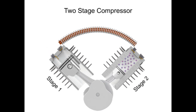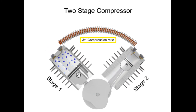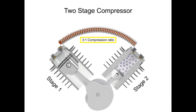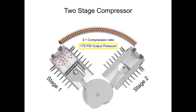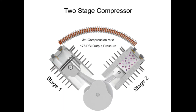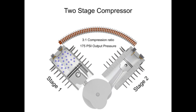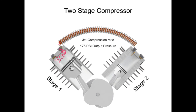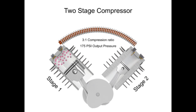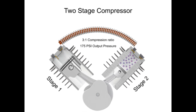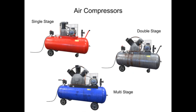Two-stage compressors have a compression range of 3 to 1 or even less per stage, but can operate up to 175 PSI. They can also deliver more air at a higher pressure than single-stage compressors of the same horsepower. If pressures of more than about 175 PSI are needed, multi-stage compressors should be used.